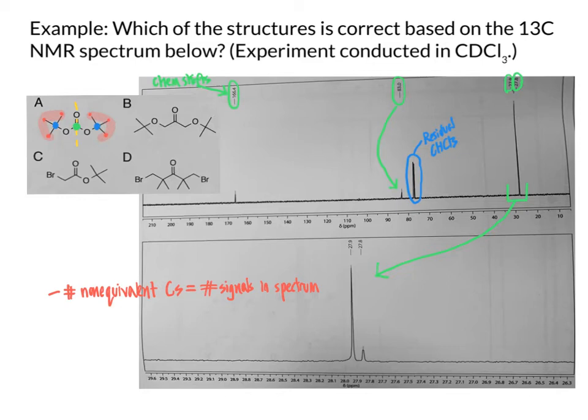This particular compound cannot possibly correspond to the carbon NMR data that we have collected here because this would only be expected to have three carbon-13 signals. And what we actually observe in our carbon-13 spectrum instead is four carbon-13 signals that we've circled in green there. So answer A is definitely a hard pass. That is definitely out. We can rule that out based on this carbon-13 experiment.